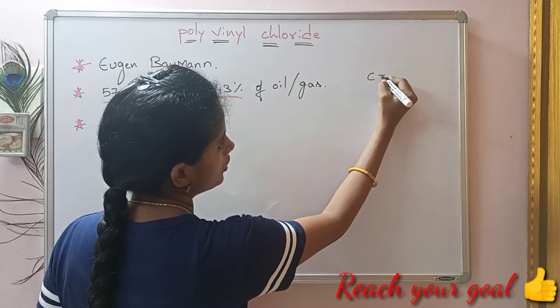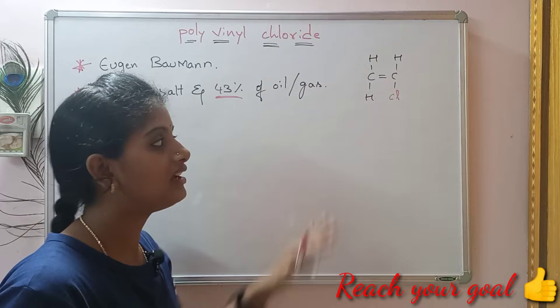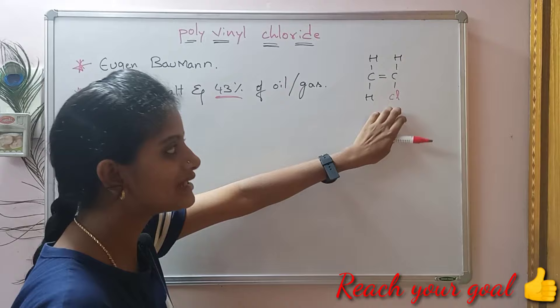So, is CH2 double bond CH2 the structure? When one hydrogen is replaced by chlorine, we get the structure of vinyl chloride. So, this is the structure of vinyl chloride. This is the monomer.